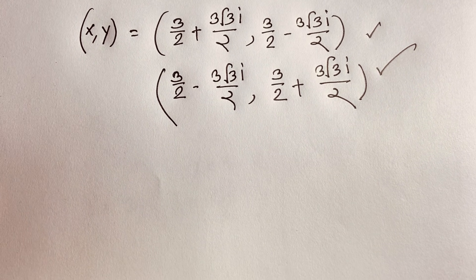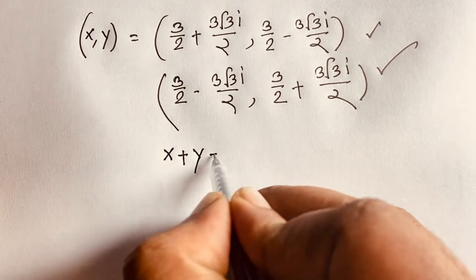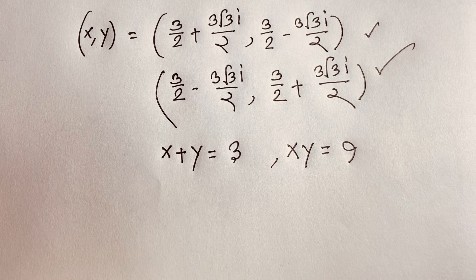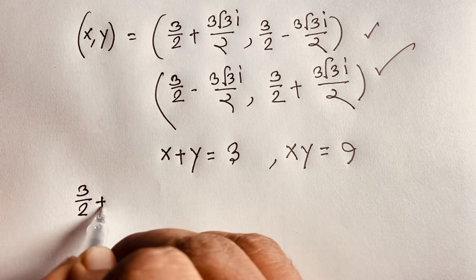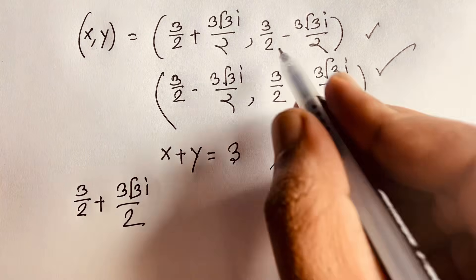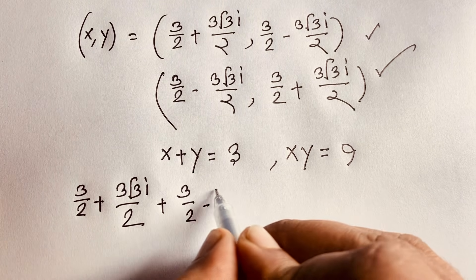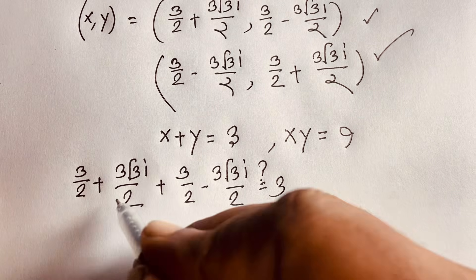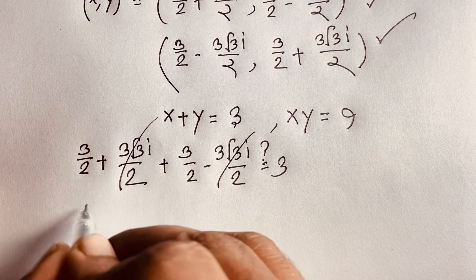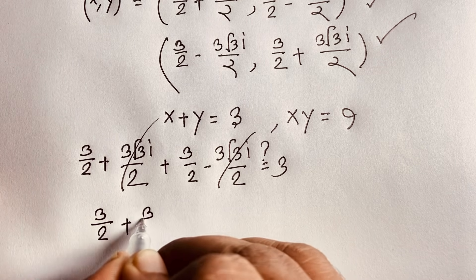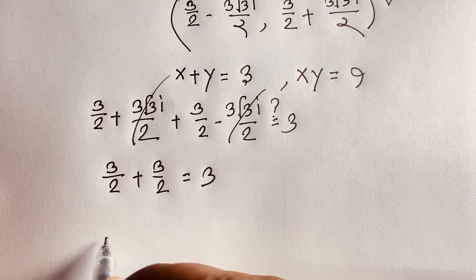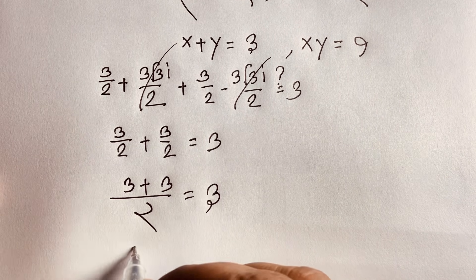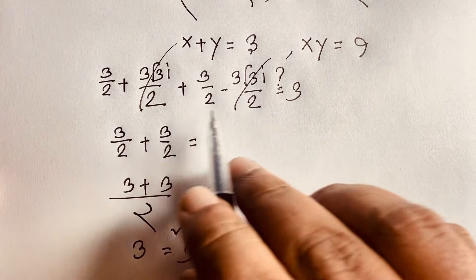Let's verify our answer. We check x plus y equals 3: taking x equals 3/2 plus 3√3·i/2 and y equals 3/2 minus 3√3·i/2, you can see that the imaginary parts cancel — positive and negative. So we get 3/2 plus 3/2, with a least common denominator of 2, giving 3 plus 3 over 2, which equals 6 over 2, equals 3. So 3 equals 3 — our answer is confirmed.